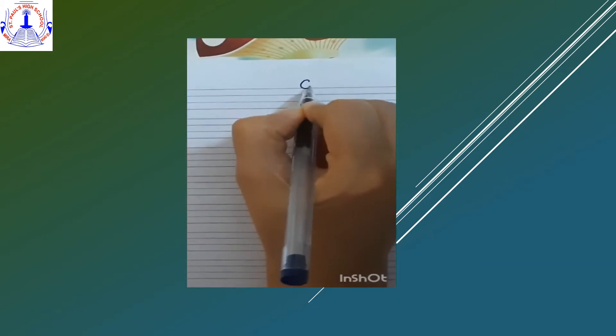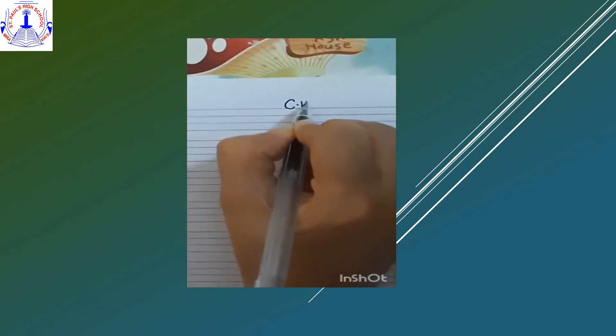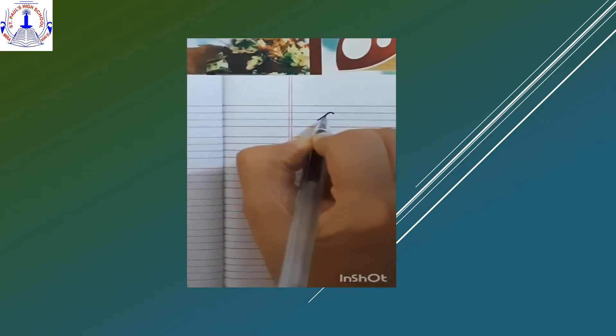So open your red and blue line notebook and write CW. Today we will write AT family words.